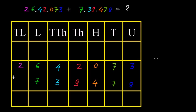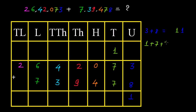Let us start with the unit place. Here 3 plus 8 is equal to 11. So I will write 1 at the unit place in the answer, and we must use a different color for the carried 1. This must be carried forward to the tens place. Now while doing the addition we must consider 1 plus 7 plus 7, which gives 15. So I will write 5 at the tens place in the answer, and 1 should be carried forward.